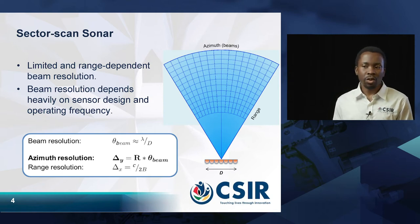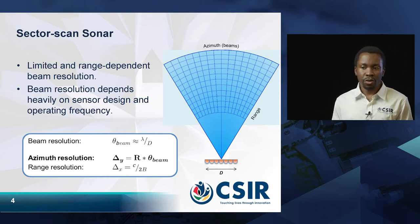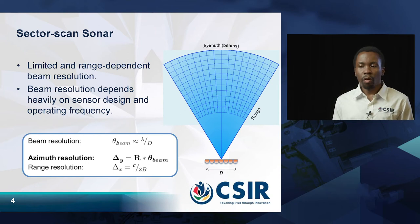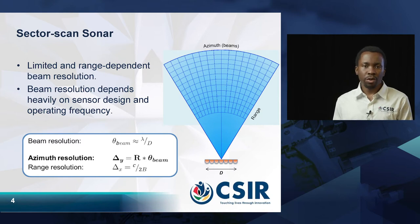In Sector Scan Sonar, the beam resolution is limited and depends on the range, the design of the sonar sensor, and the operating frequency. The azimuth resolution depends on the beam resolution, the cross range, and the range — so the farther you try to image in range, the worse your azimuth resolution becomes. The range resolution depends on the speed of propagation of the sound waves and the bandwidth used during pinging. This is the case for all forms of sonar imaging using compressible pulses like the linear frequency modulated pulse, so range resolution generally won't change. We will primarily focus on azimuth resolution as the differentiating property between SAS and these other imaging schemes.